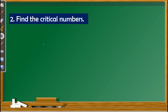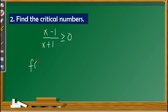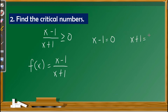After having the standard form, the next step is to find the critical numbers. Using the standard form, we have the function f of x equal to x minus 1 over x plus 1. Critical numbers refer to the zeros of both numerator and denominator. To solve for zeros, we simply equate the numerator to 0 and the denominator to 0. This gives us x equals 1 and x equals negative 1. These are the critical numbers.